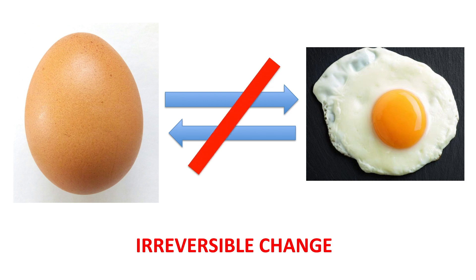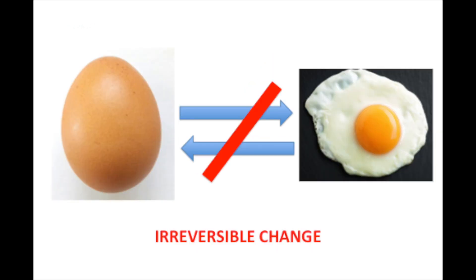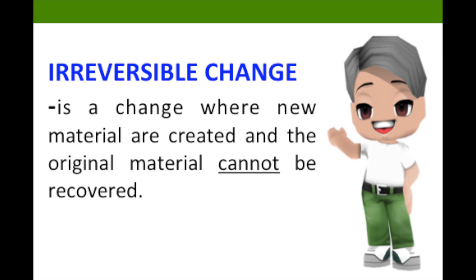Irreversible means that the change from heating or cooling cannot be undone. One example of this is when you cook an egg — after heating, it cannot go back to the way it was before. Another example is when you burn a piece of paper, it turns to ash. It cannot become paper again. This is called irreversible change.